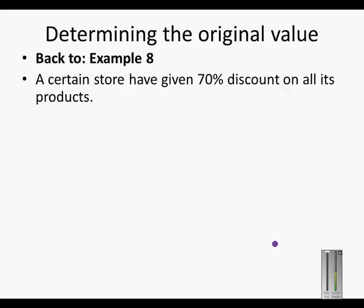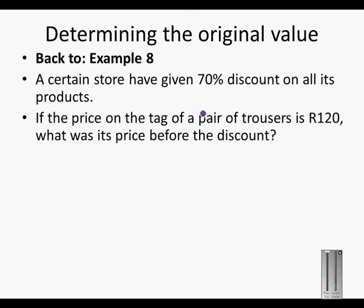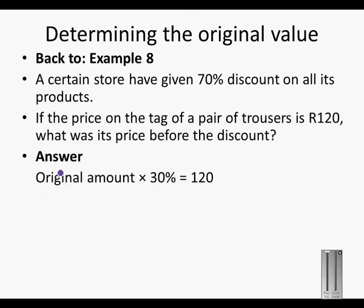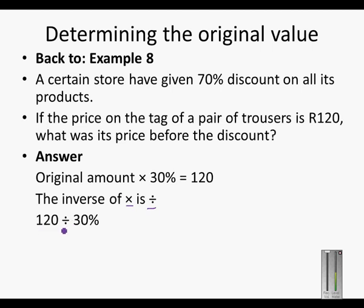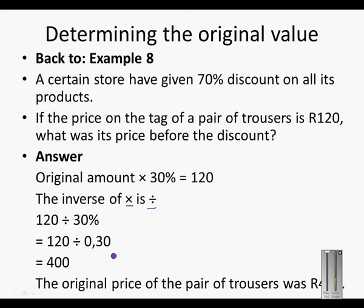Back to Example 8. The original amount times 30% gives us 120 rand. The inverse of multiplying is dividing. So 120 divided by 30%, or 120 divided by 0.30, gives us 400 rand. The original price of the pair of trousers was 400 rand.